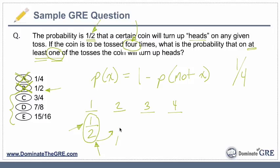What if I give you a second flip? Wouldn't you assume your odds would go up? Now you have two chances to get heads. I already have a 50-50 chance — if you give me two tries, I've got a very good chance of getting it. What if I still don't get it? I'm going to give you a third chance, so now my probability goes up even more. And then I'm going to give you a fourth chance.